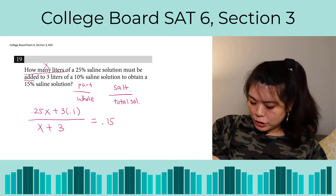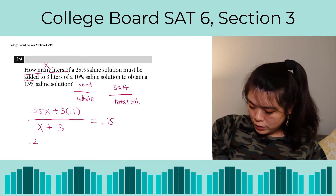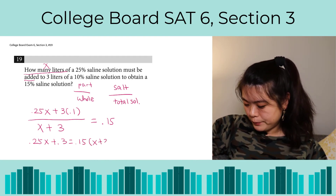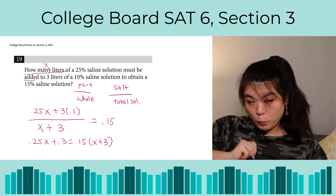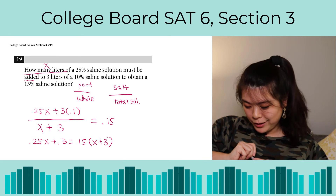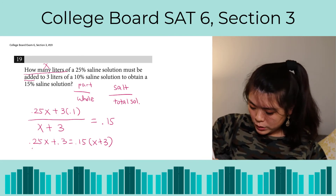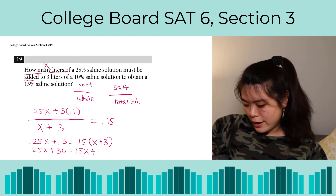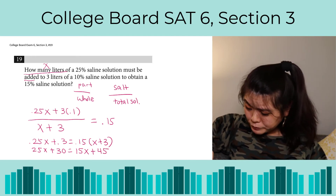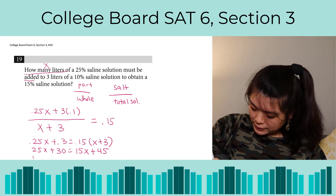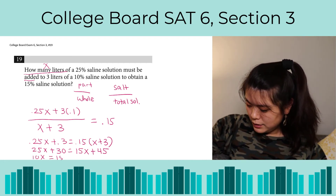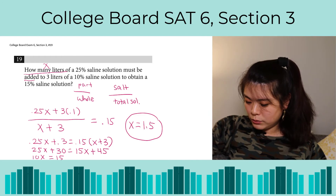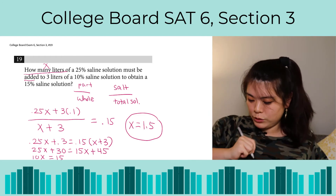Multiplying everything by 100 to eliminate decimals: 25X + 30 = 15X + 45. Combining like terms: 10X = 15, so X = 1.5. Make sure there's no rounding requirement — there isn't, so our answer is 1.5 liters.